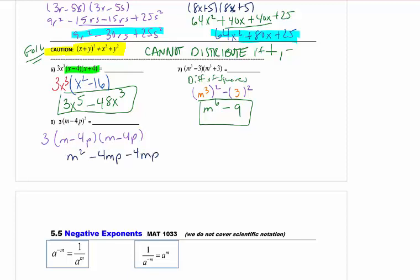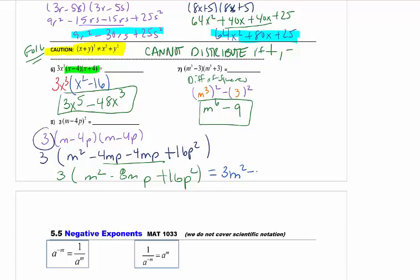Remember we put them in alphabetical order: m² - 4mp - 4mp + 16p². This 3, don't forget it. Always get double the middle term, so I get -8mp + 16p². And my last step here I am going to multiply every term by 3. So I get 3m² - 24mp + 48p². This is my answer.